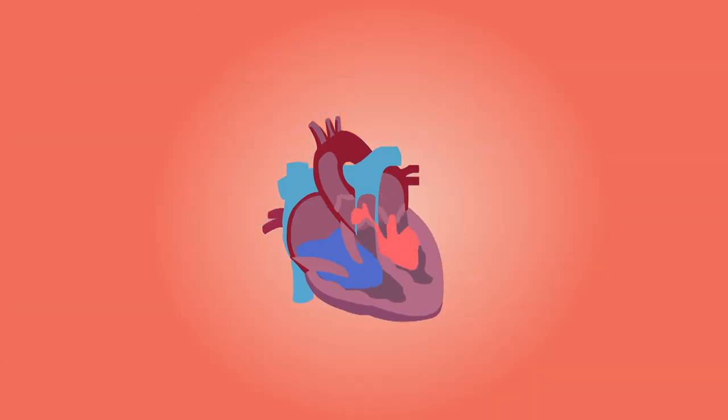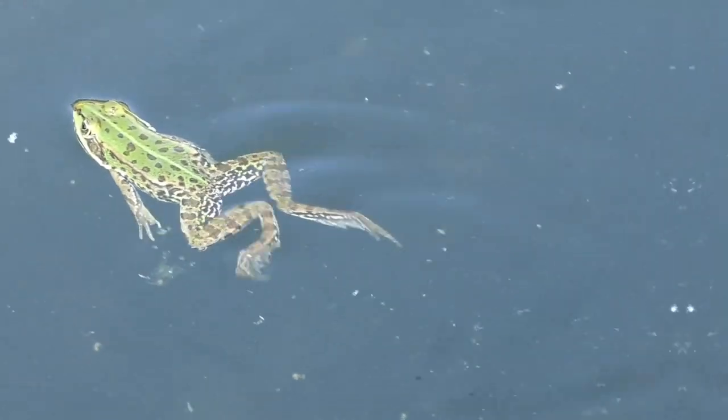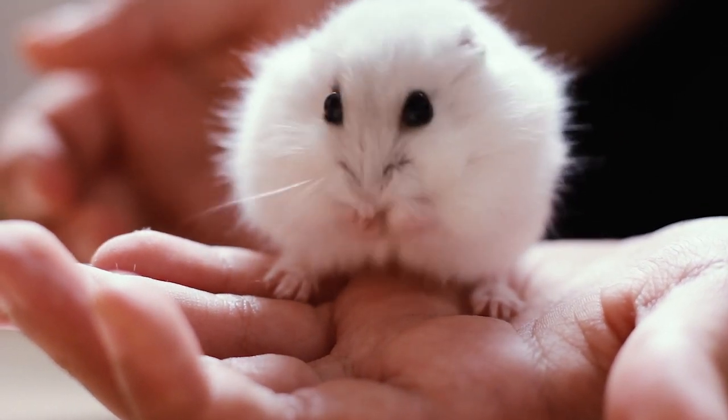Your heart is about the same size as your fist. Frogs drink water through their skin. A pet hamster can run up to 8 miles a night on a wheel.